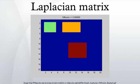In the mathematical field of graph theory, the Laplacian matrix, sometimes called the admittance matrix, Kirchhoff matrix, or discrete Laplacian, is a matrix representation of a graph. Together with Kirchhoff's theorem, it can be used to calculate the number of spanning trees for a given graph. The Laplacian matrix can be used to find many other properties of the graph.